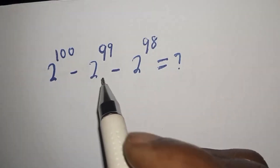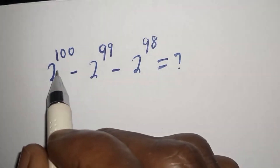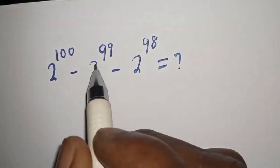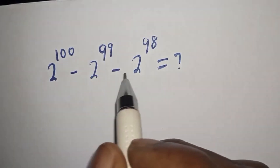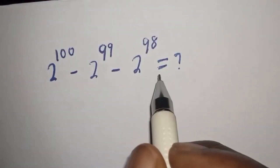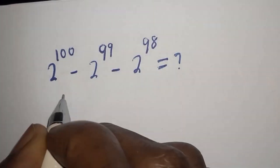How to simplify this nice math problem? 2 raised to power 100 minus 2 raised to power 99 minus 2 raised to power 98 is equal to what solution?